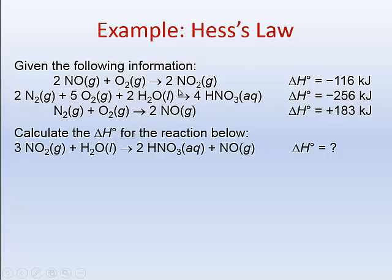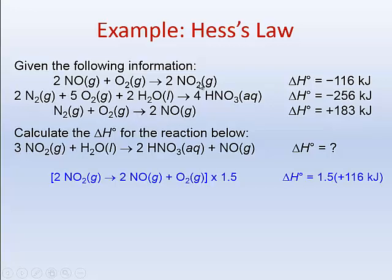The second problem is the coefficients don't match — there are only two moles of NO₂ in this step, but we need three moles in the overall reaction. We can change this reaction as long as we change it consistently and adjust the ΔH value along with it. First, we reverse the reaction, writing NO₂ as the reactant and NO and O₂ as the products. When we reverse the direction, we reverse the sign of ΔH — so instead of negative 116 kilojoules, we now have positive 116 kilojoules.